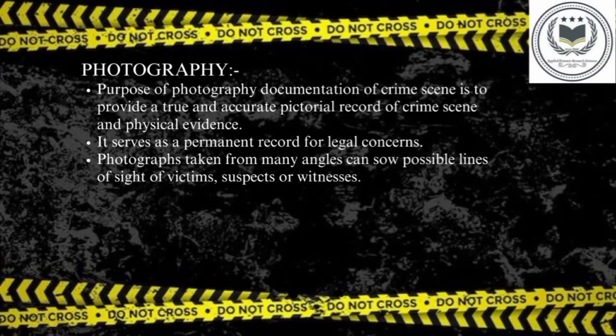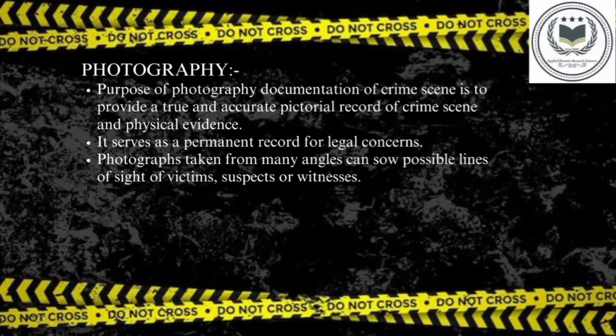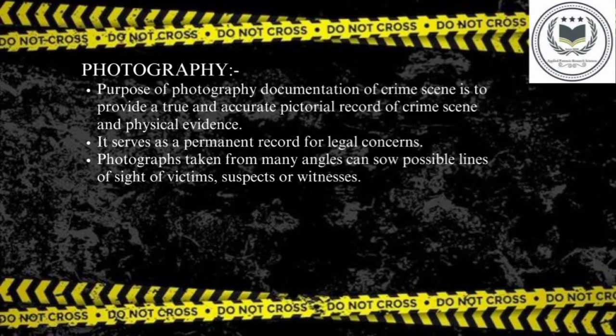Now let's move to the next step, which is photography. As we all know, photography is basically capturing any movement or clicking pictures, but crime scene photography is a little bit different. It includes capturing photographs of the crime scene with more carefulness by the investigator. The purpose of photography documentation is to provide a true and accurate pictorial record of the crime scene and physical evidence, serving as a permanent record for legal concerns. Photographs should be taken from different locations, positions, and angles so that every bit of information can be captured.